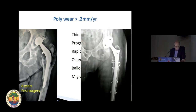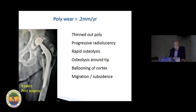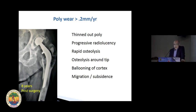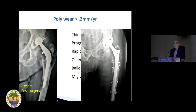This case — the Triad stem, just eight years post surgery — see what you've got: absolutely thinned-out poly, progressive radiolucency, osteolysis all along the femur including the tip because the particles get pumped there. You have thinning and ballooning of the cortex. Here you need to do a revision. We are not going into the details of how and when to do that.